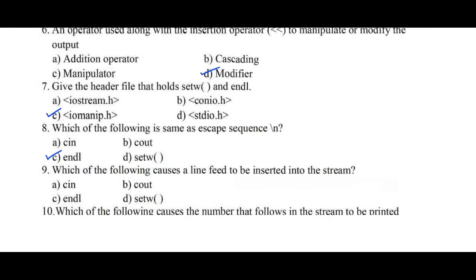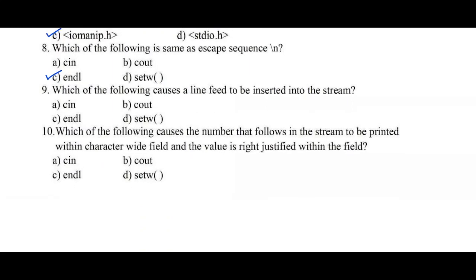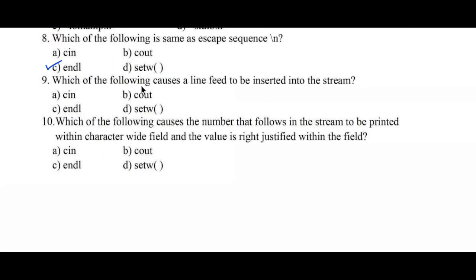Question number 9: which of the following causes a line feed to be inserted into the stream? Option A: cin, B: cout, C: endl, D: setw. Here, line feed is similar to backslash n, which leaves one new line feed. So it is endl — option C is the right answer.